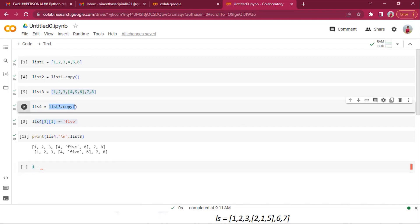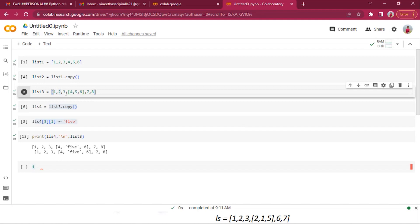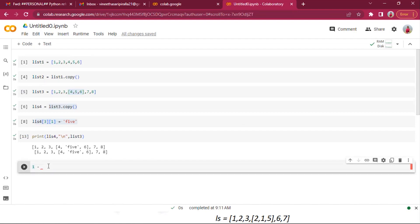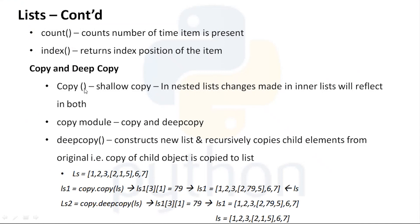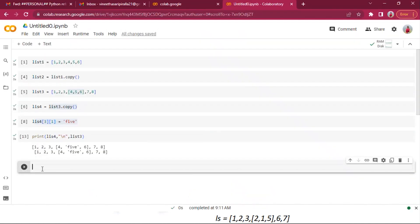This is where copy and deepcopy come into picture. Shallow copy creates a new outer list object but only references for inner lists. So any changes to inner lists are reflected in both copies. To avoid this, we use Python's copy module, which offers two types: copy() (shallow) and deepcopy().